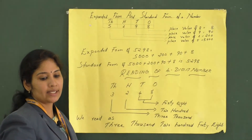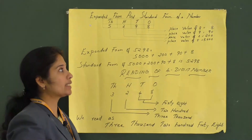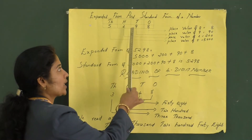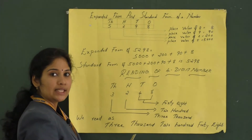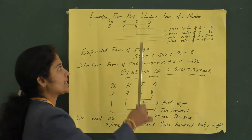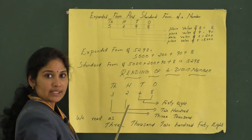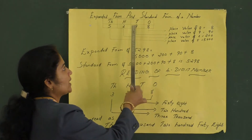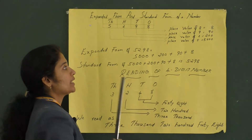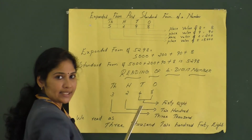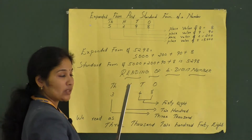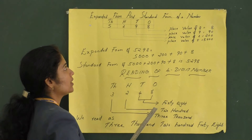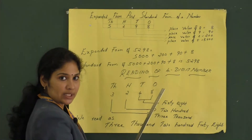Next, we will study standard and expanded form of a four-digit number and also learn how to read a four-digit number. Can you read this number? 5298. We learned face value and place value. Place value of 8: 8 comes under the ones place — 8 times 1 is equal to 8. Place value of 9: 9 times 10 is equal to 90. Place value of 2: 2 times 100 is equal to 200. Place value of 5: 5 times 1000 is equal to 5000.